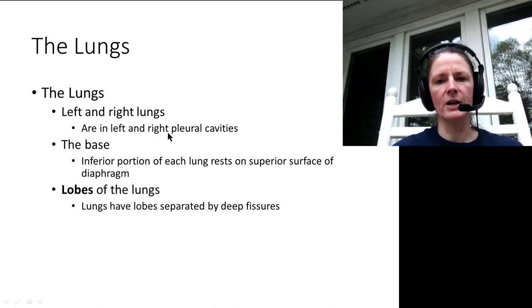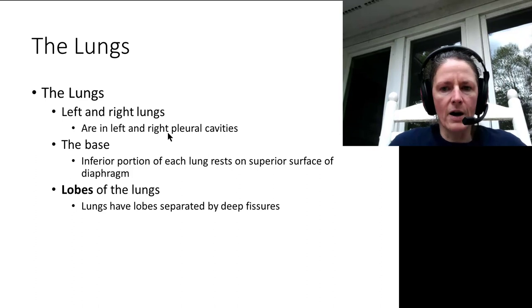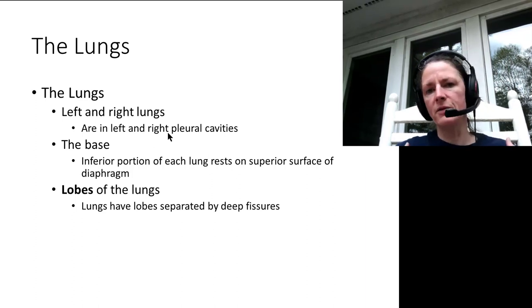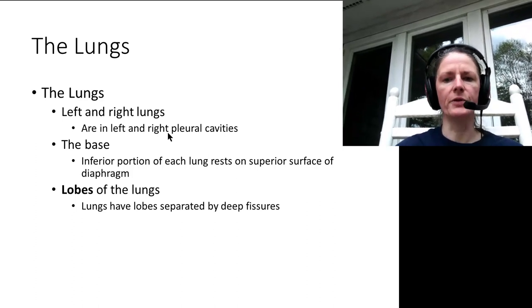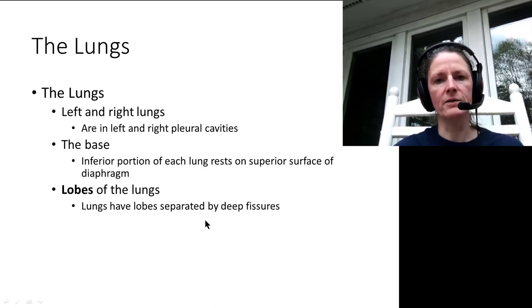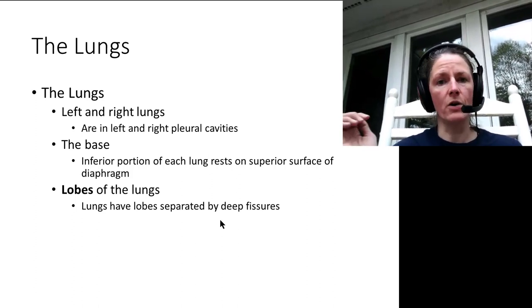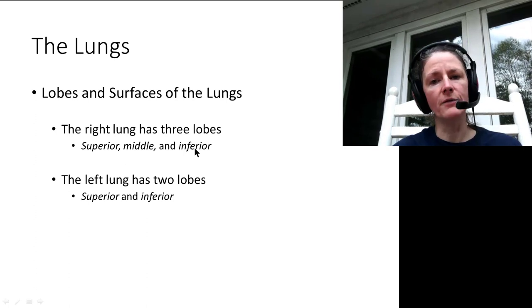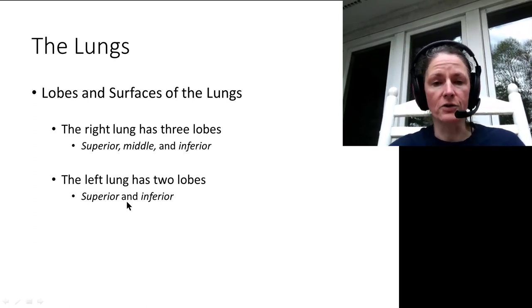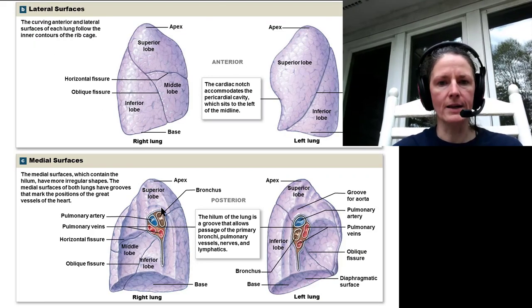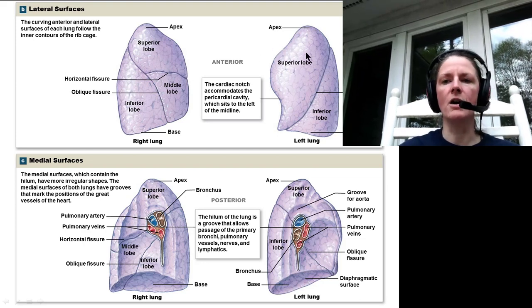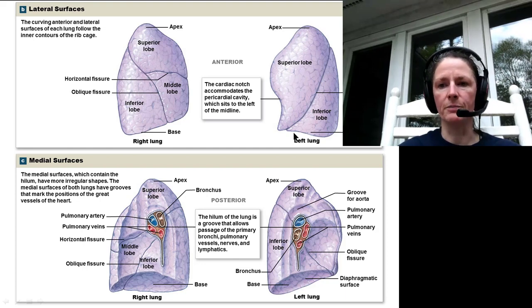The lungs are contained within their pleural cavities. Their bases sit on top of the diaphragm and their apex projects just above the first rib. Fissures separate the lobes: the right lung has a horizontal fissure and an oblique fissure, giving it superior, middle, and inferior lobes. The left lung has only an oblique fissure, giving it superior and inferior lobes. The left lung is a little longer and thinner; the right lung shorter and fatter.